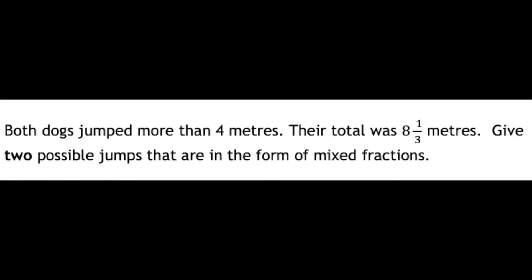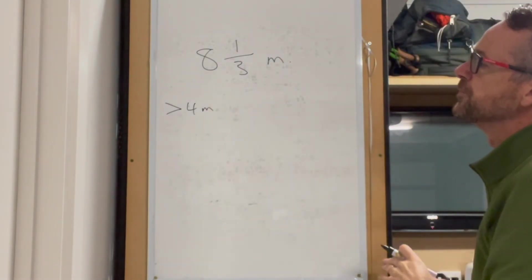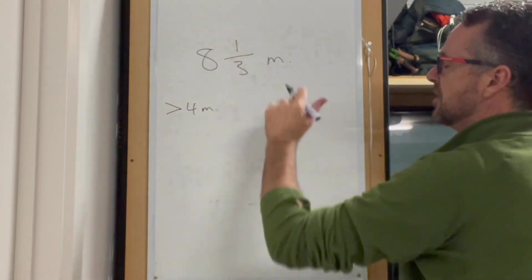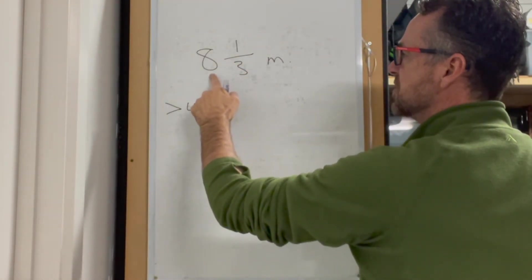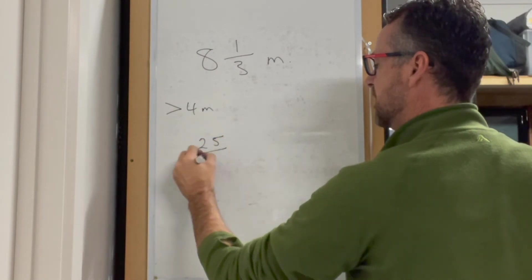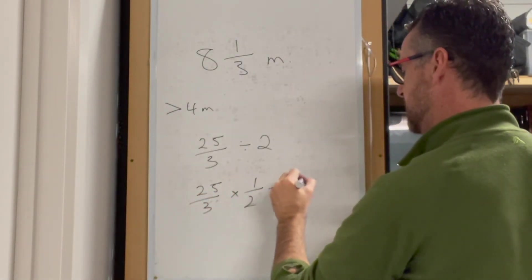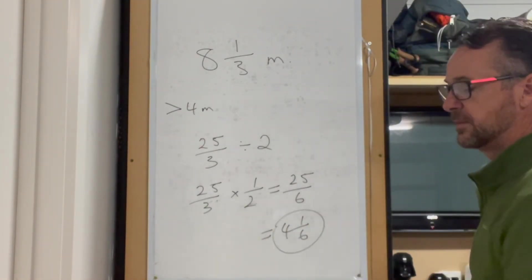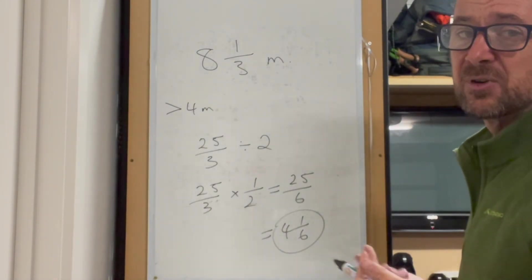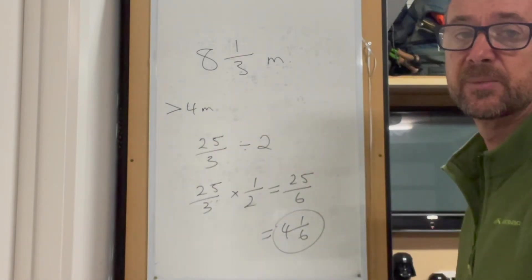8 and 1 third meters is the total distance two dogs have jumped. Both dogs jumped greater than 4 meters. I would split 8 and 1 third in half: 3 times 8 is 24, plus 1 is 25 over 3. Divide by 2: 25 over 3 multiplied by 1 over 2 equals 25 over 6, which equals 4 and 1 sixth meters each. Any answer that adds up to 8 and 1 third with both greater than 4 meters would be correct.